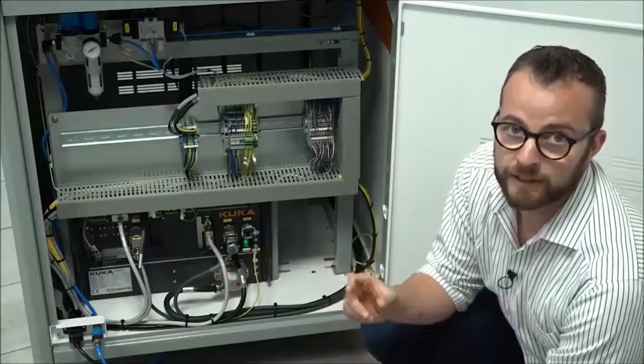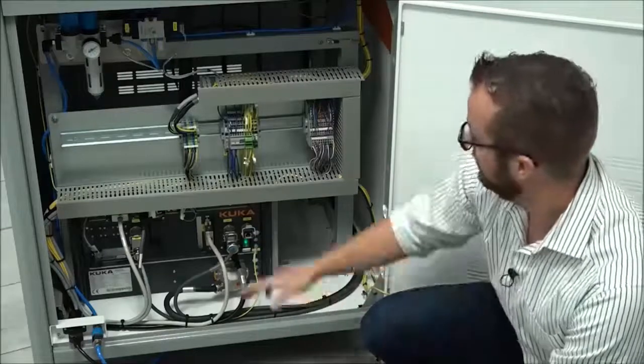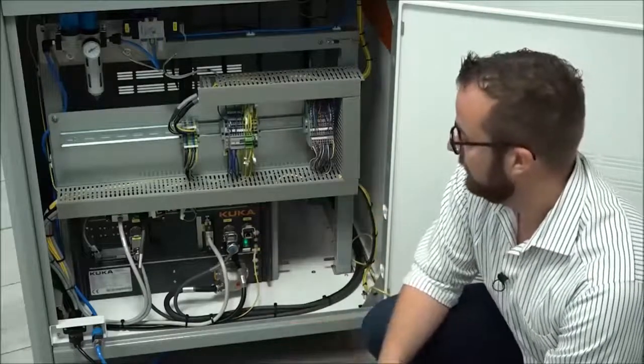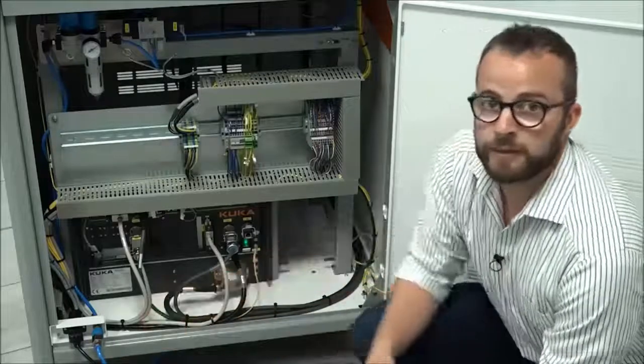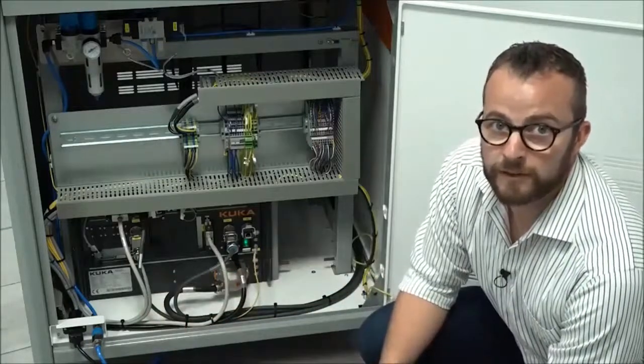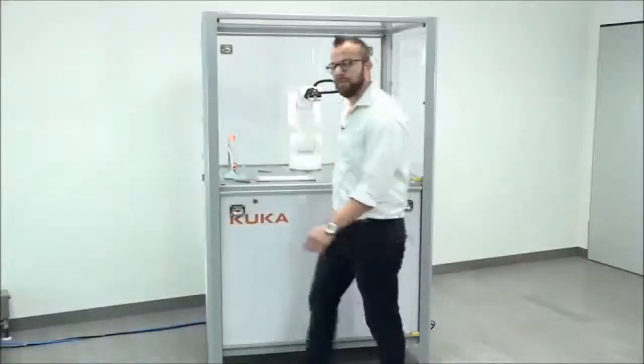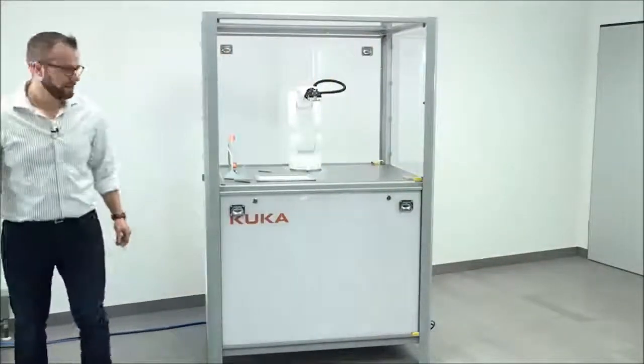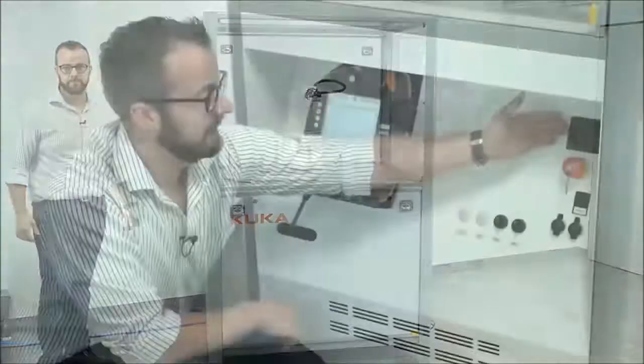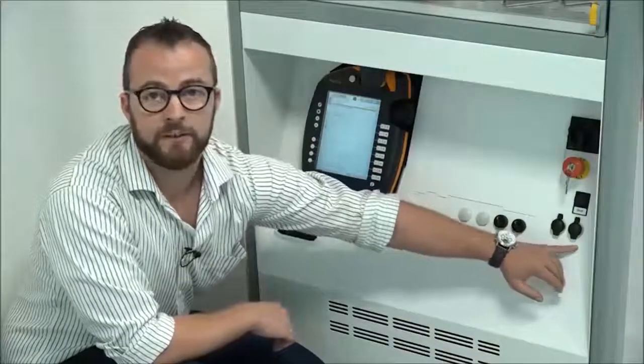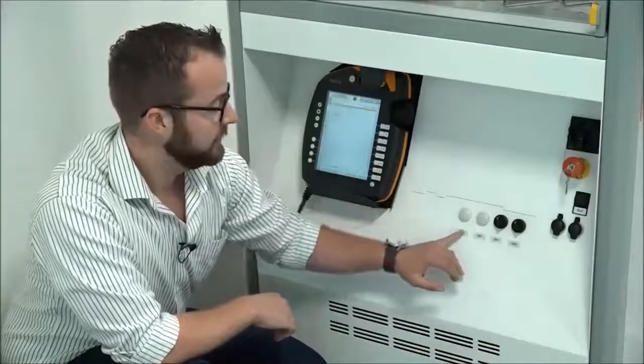Below the electrical components, there is the KR4 compact and the electrical and pneumatic interface of the whole cell. On the other side, we have all the control panels for the usage of the cell, like the main switch, the emergency button, the quit button, a KSI and USB interface, and digital IOs.